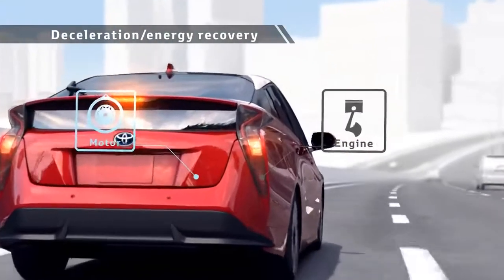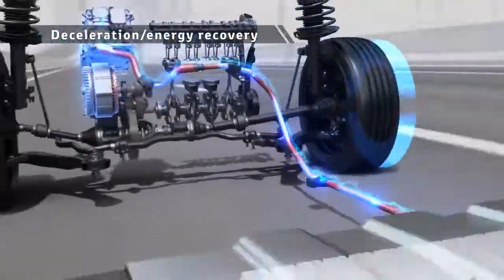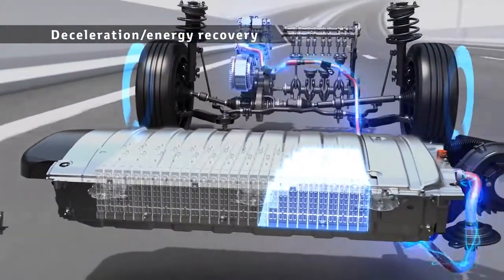During deceleration, the rotation of the tires drives the motor to generate electricity to store power in the batteries for reuse.